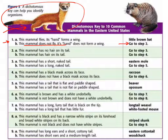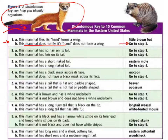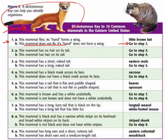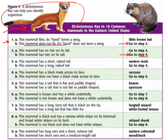Step 2A says: 'This mammal has no hair on its tail.' Step 2B says: 'This mammal has hair on its tail.' Looking at this mammal, it does have hair on its tail, so 2B is the better statement. The directions say go to step four — meaning we skip step three and go directly to step four.